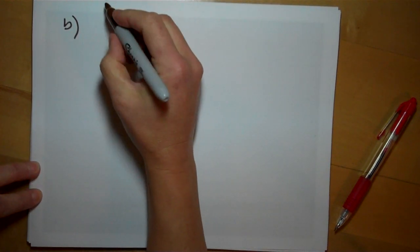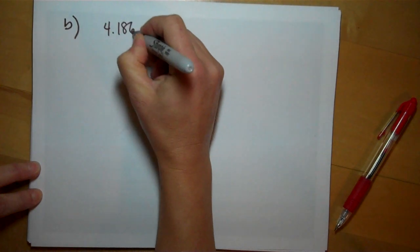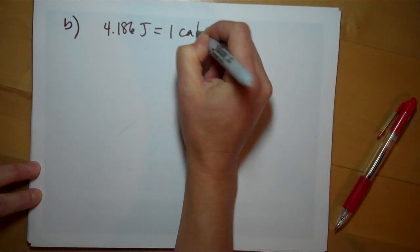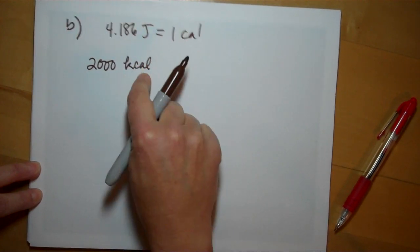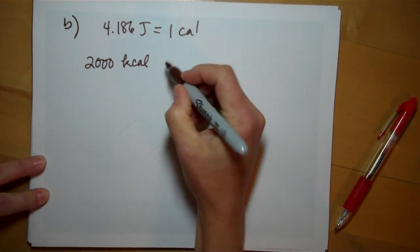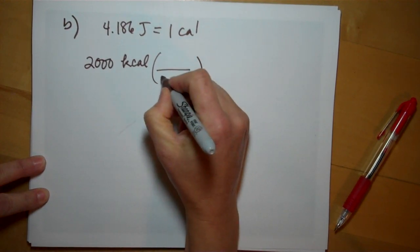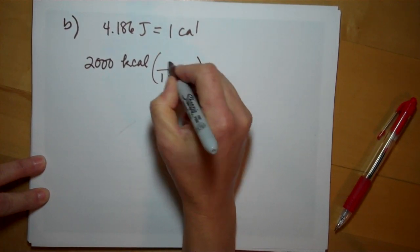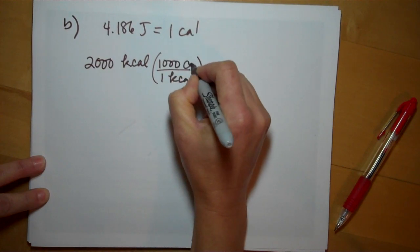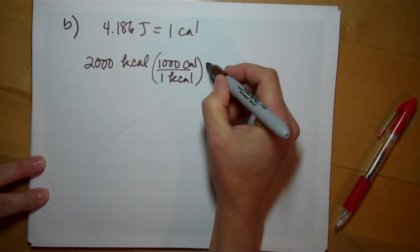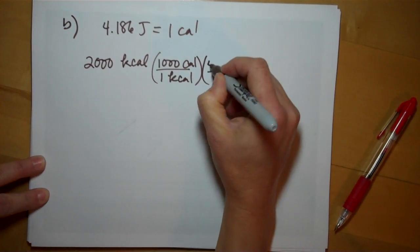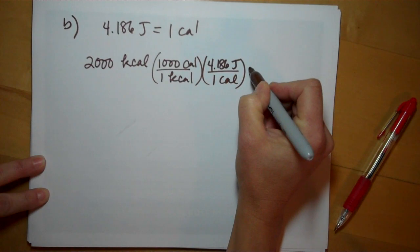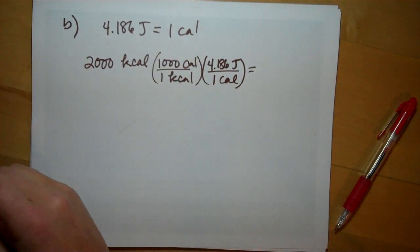For part B, you know that there's 4.186 joules in every one calorie, and we're starting with 2000 kilocalories. So we first need to convert this to calories. For every one kilocalorie there's a thousand calories. Remember a single calorie is very small. And one single calorie is the same as 4.186 joules, so you can see how the units will cancel.